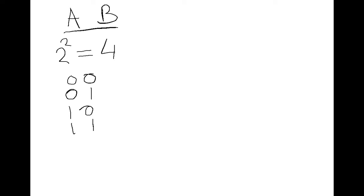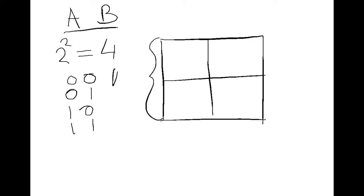Now, to represent those as a Karnaugh Map, we have to draw a box. So four combinations means four boxes that can contain values. Now, we'll use one side to represent A, and one side to represent B.